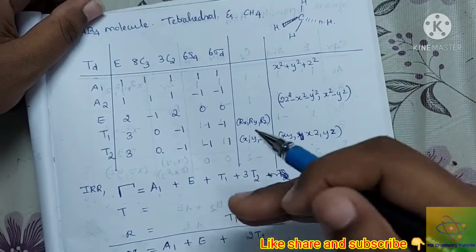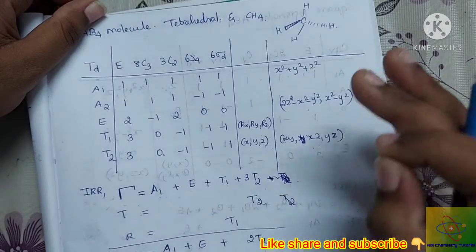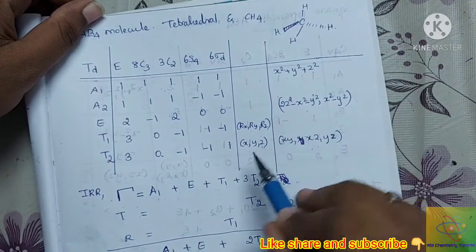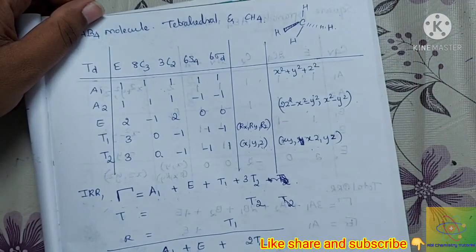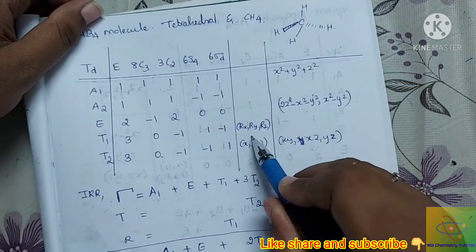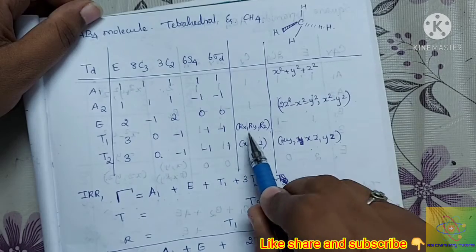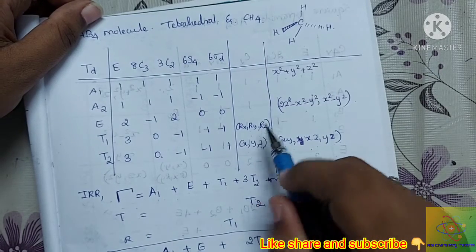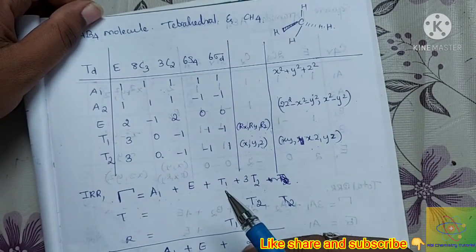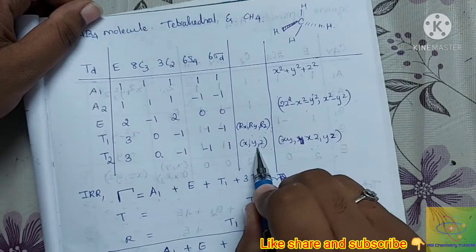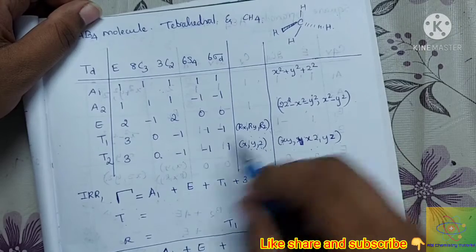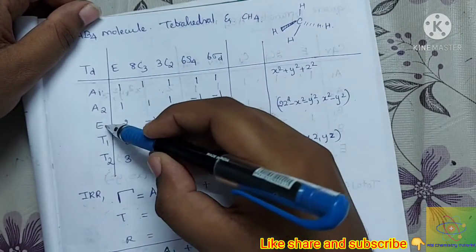Translational and rotational modes are separated out. The translational mode corresponds to the second column in the character table, represented by x, y, z coordinates. Rotational modes correspond to Rx, Ry, Rz. The translational mode belongs to the T2 symmetry species.